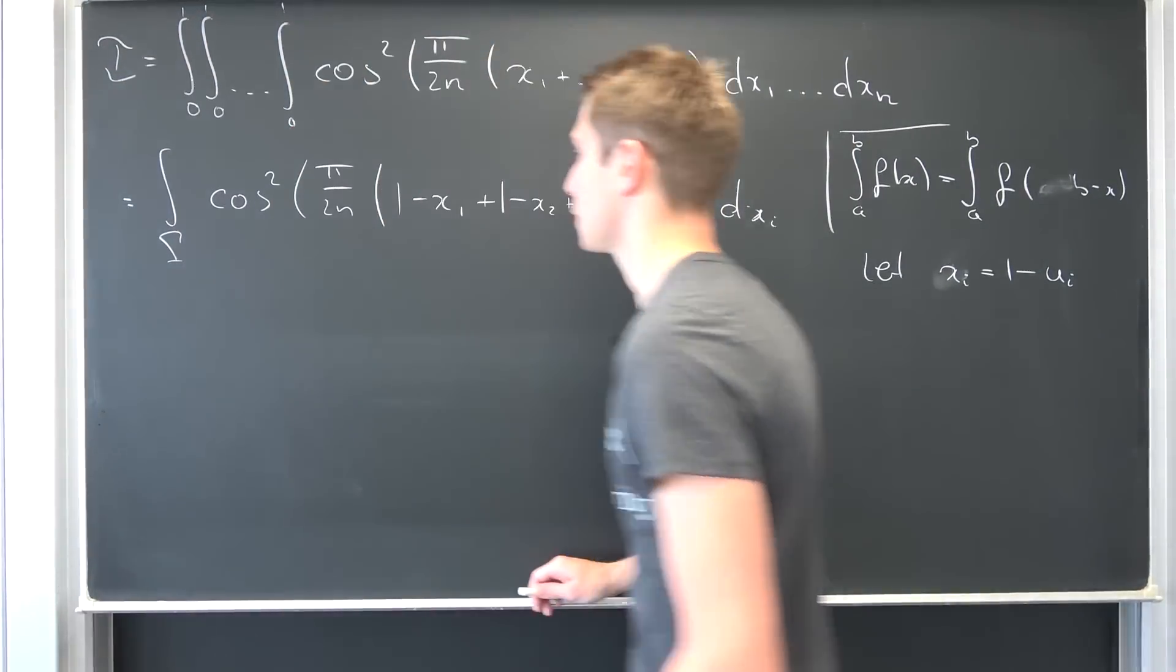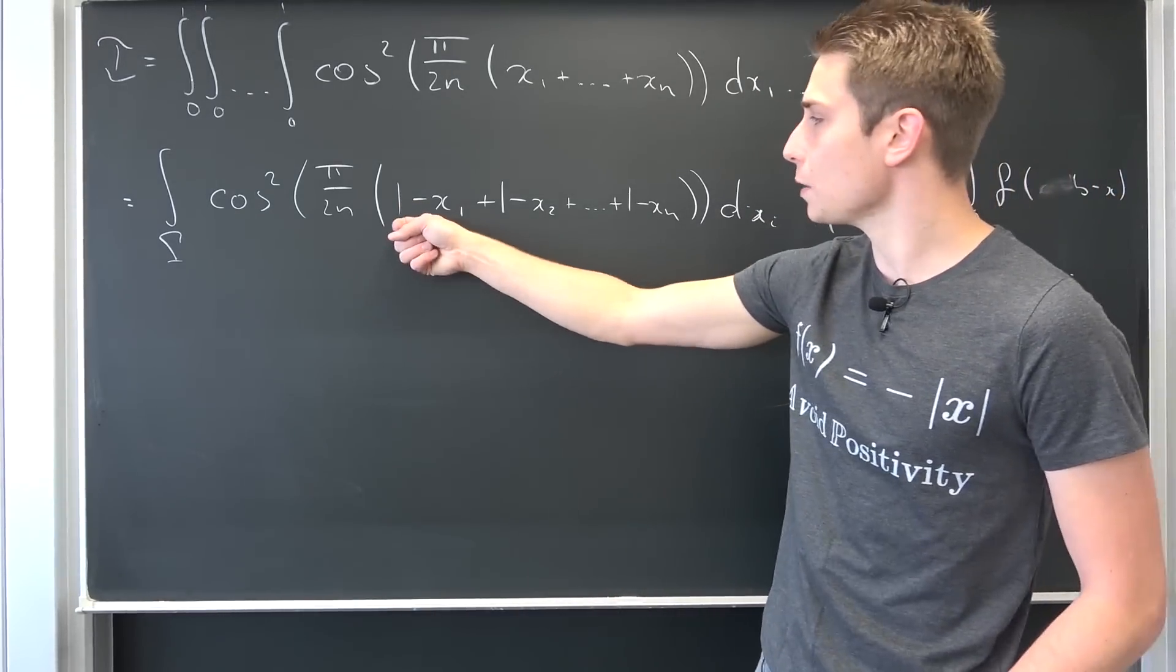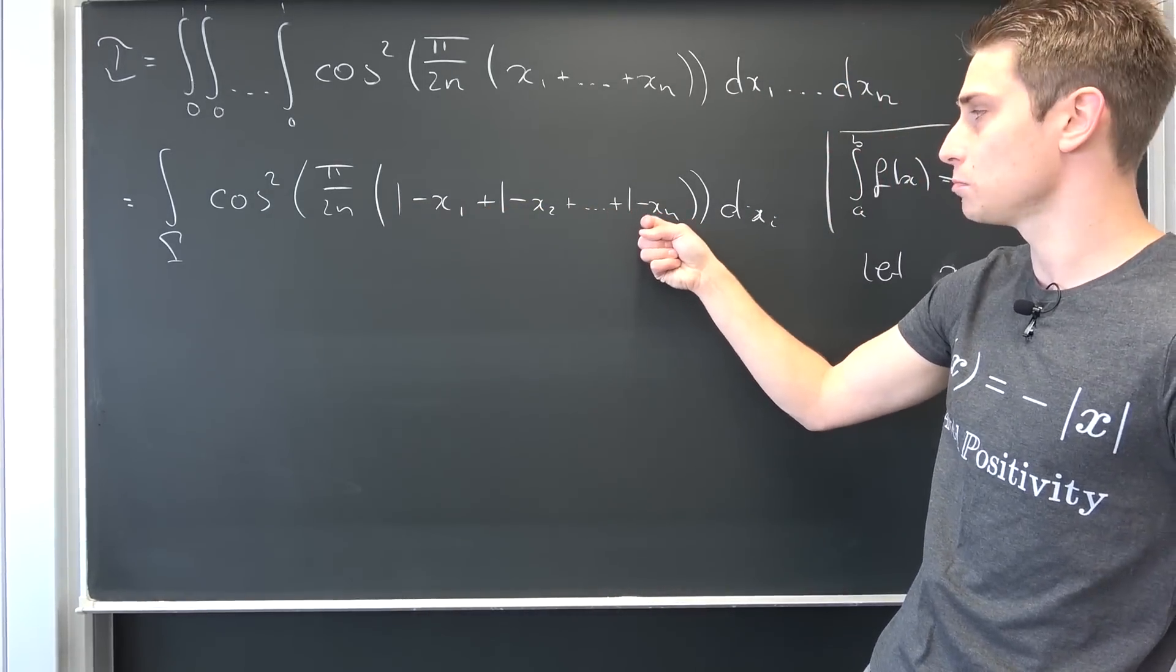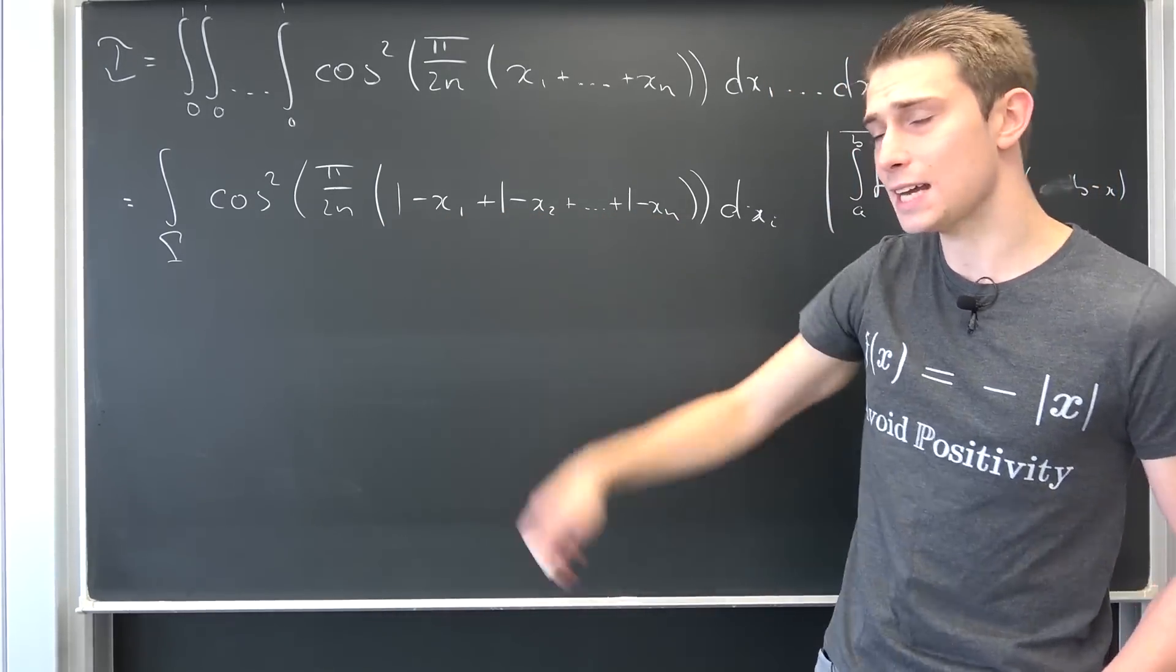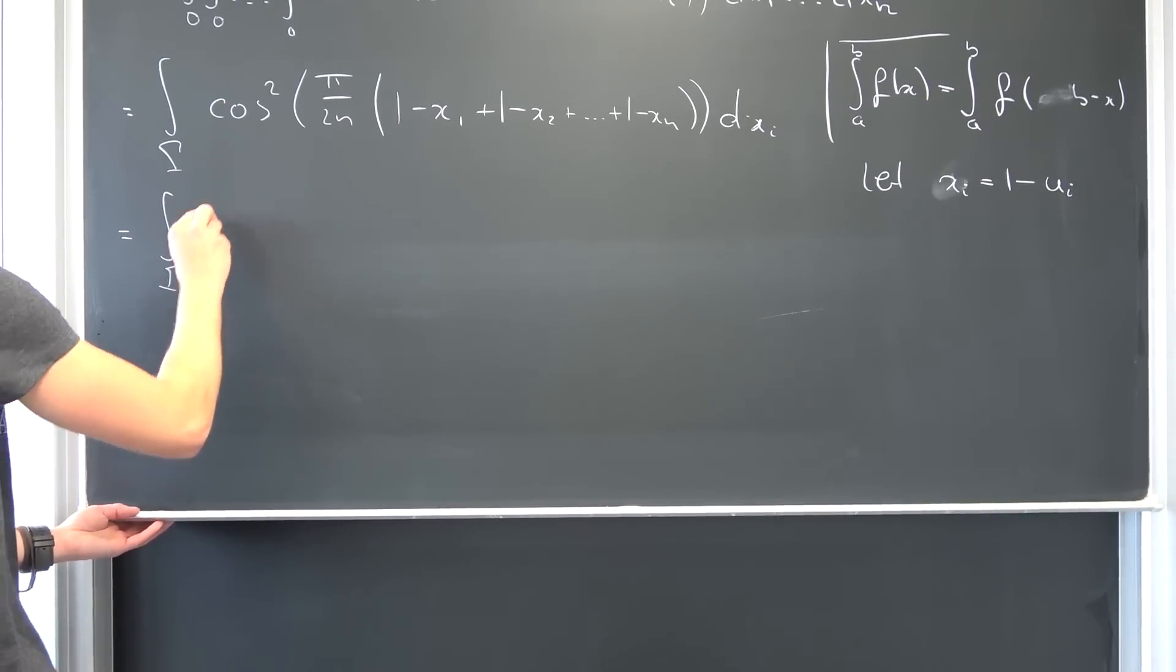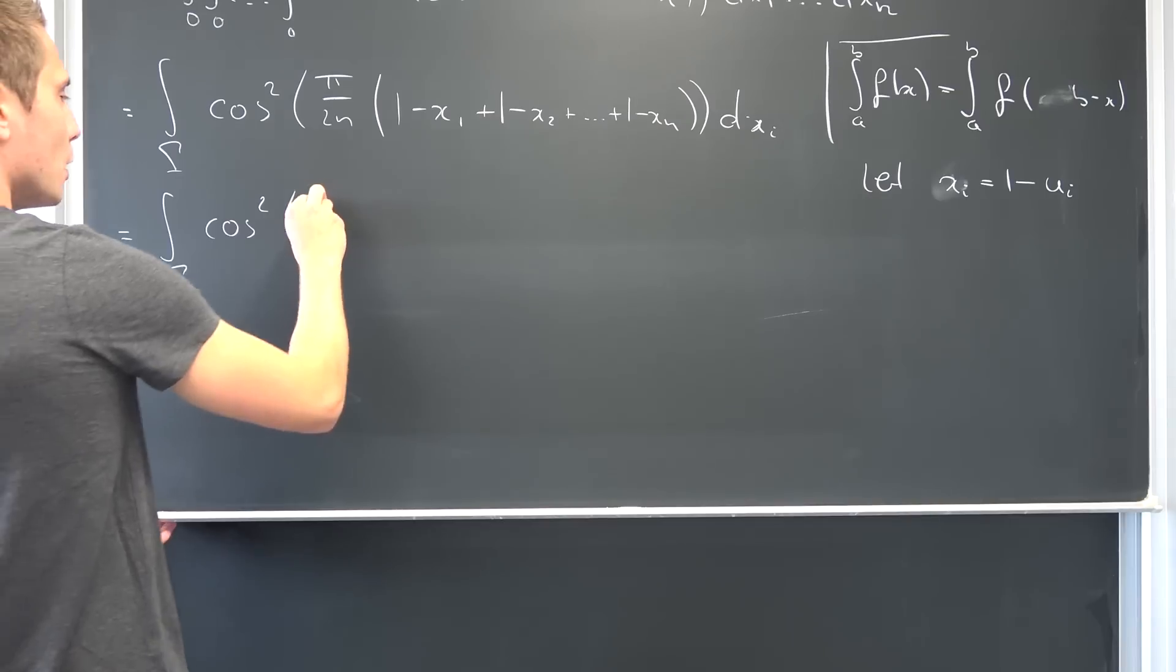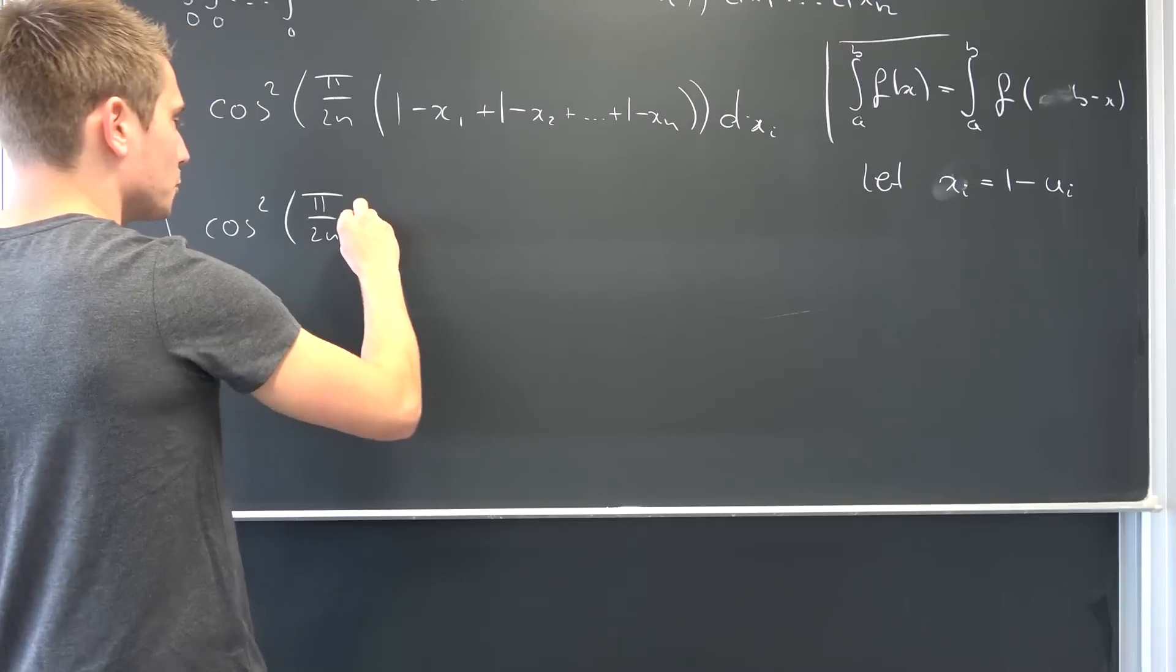And now, one cool thing is, we can actually count a bit of stuff. We have 1 plus 1 plus 1 up until n times 1. We have n ones in total, meaning this is additive. We can break this up into, actually, the cosine squared of pi over 2n. And we have n times 1, which is n. And then n is going to cancel out. This is so good here, seriously.